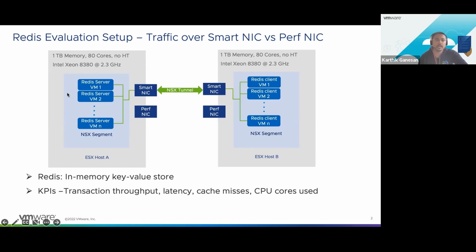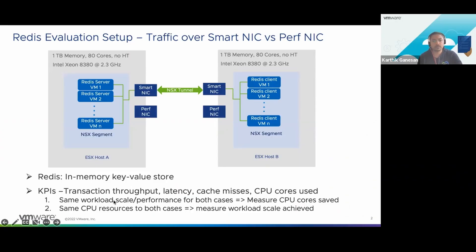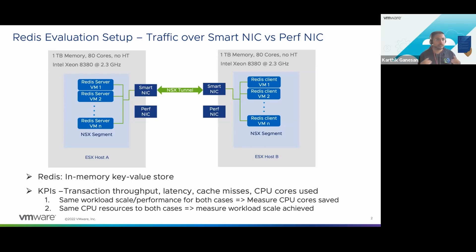The things we want to look at are the aggregate transaction throughput and the transaction latencies. We are also going to look at the last-level cache misses on both hosts. Lastly, we keep a tab on the CPU cores being used on each host to understand the CPU savings. For the first experiment, I'm going to keep the workload scale between the performance NIC case and the DPU case the same and focus on the CPU cores that can be saved. For the second experiment, I'm going to translate some of those saved cores into performance and measure the maximum workload scale achievable with the same number of cores.